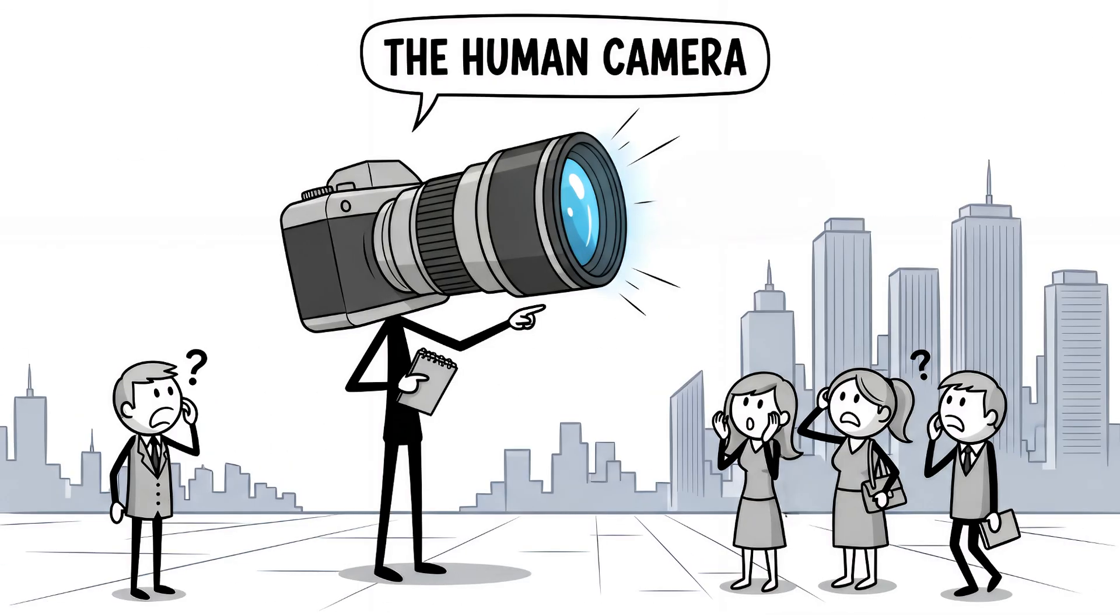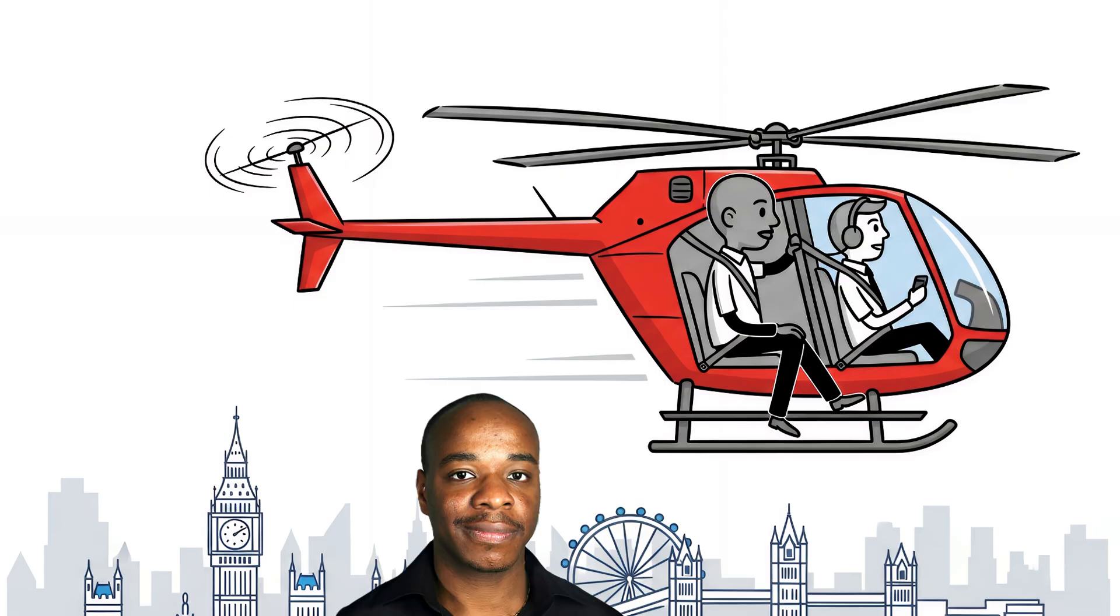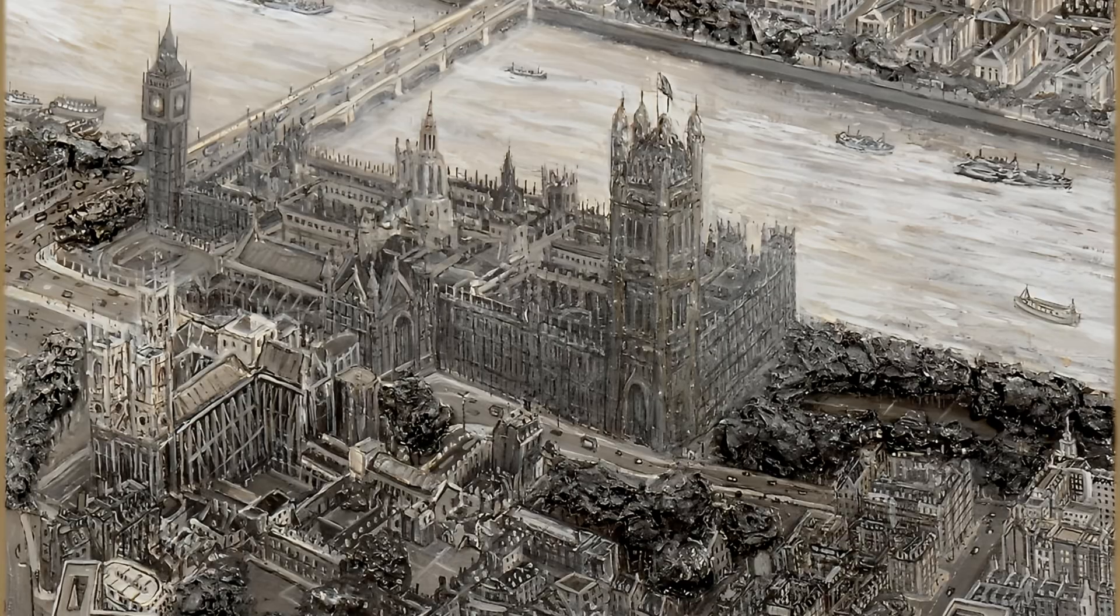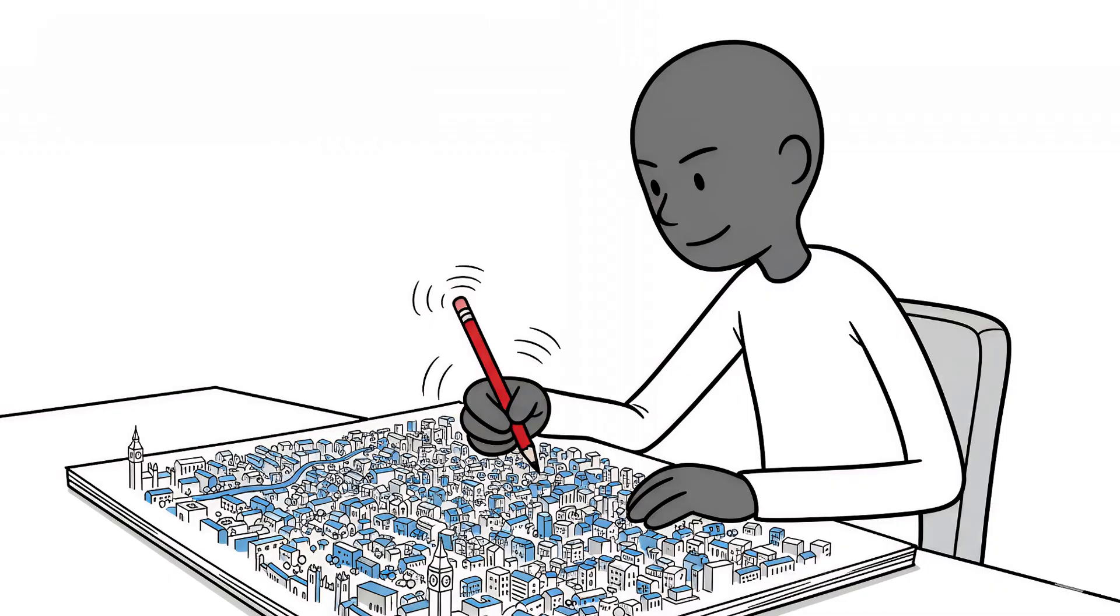Number 7. The Human Camera. In 2005, Stephen Wiltshire took a 20-minute helicopter ride over London. When he landed, he drew the entire city from memory. Not the highlights, every single building, perfect to scale. The accuracy was mathematically impossible.